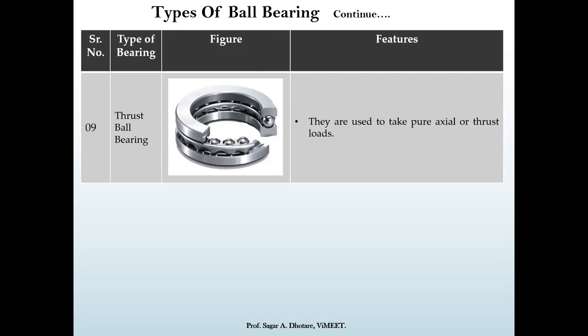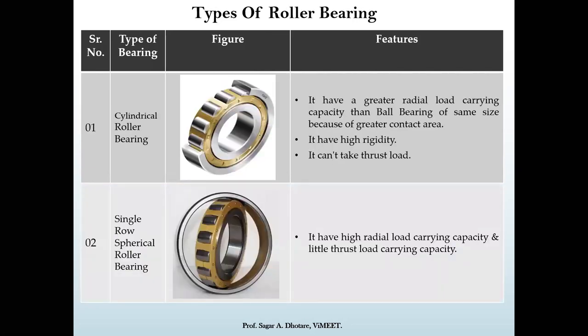The last in the ball bearing segment is the thrust ball bearing. It can take purely axial or thrust load only. These bearings are typically used in ceiling fans, where only pure axial or thrust load is present.